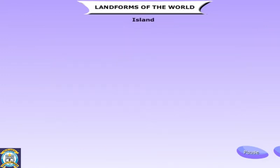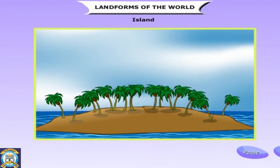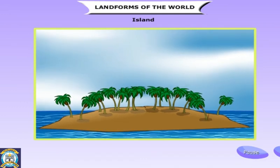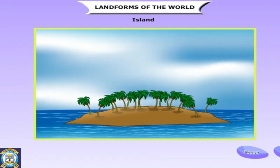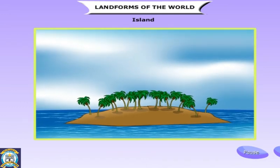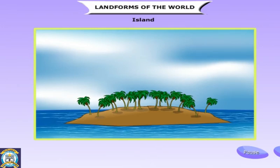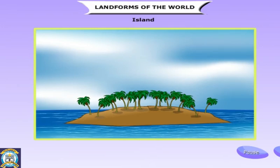An island is land surrounded by water on all sides. In India, Andaman and Nicobar and Lakshadweep are groups of islands. Sri Lanka is an island. Greenland is the biggest island in the world.